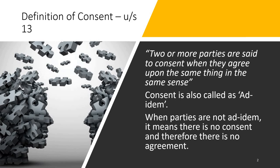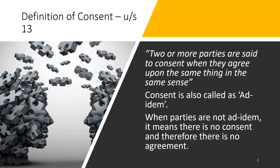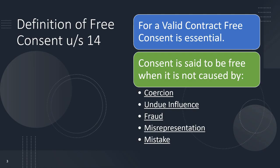Once we understand consent, when is it said to be free? For a valid contract, free consent is essential. Consent is said to be free when it is not caused by these five things: coercion, undue influence, fraud, misrepresentation, and mistake. Section 13 talks about consent, Section 14 about free consent, Sections 15–20 cover each of the five factors.